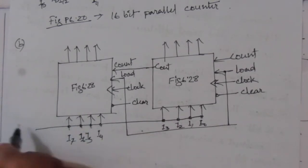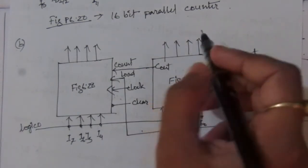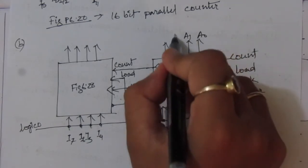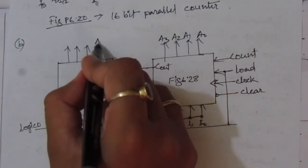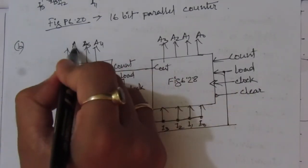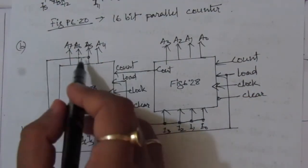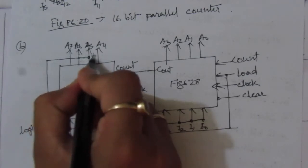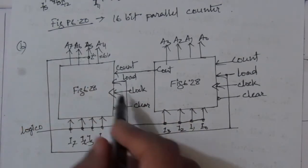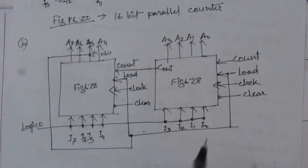We apply a logic 0 to appropriate inputs. The outputs are A0 through A7. We connect the parallel load to output A5, which corresponds to 2 to the power 6 equals 64. By connecting this to both load inputs, we will have a counter that counts from 0 up to 64.